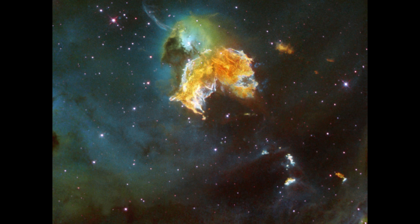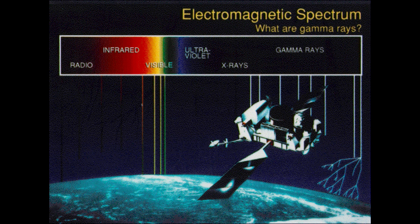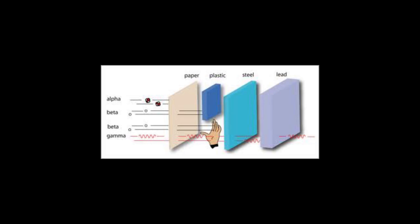What are gamma rays? Gamma rays have the smallest wavelengths and the most energy of any wavelength in the electromagnetic spectrum. Their wavelength is less than a tenth of a nanometer, meaning the wavelength is smaller than a tenth of a billionth of a meter.